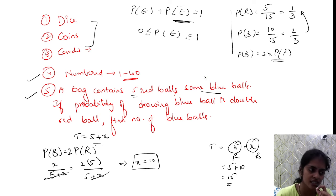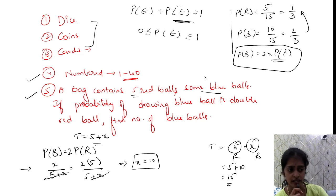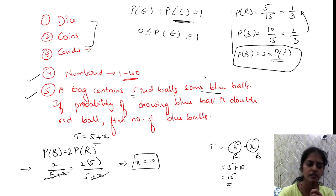Here we have condition: probability of drawing blue ball is double the probability of red ball. Probability of all is number of balls by total number of outcomes. So probability of blue ball is x by total balls x plus 5 equals double the probability of red ball. So 2 times probability of red ball is 5 by 5 plus x. 5 plus x cancels and x value is 10. Total balls is equal to 5 plus x equals 15 balls.